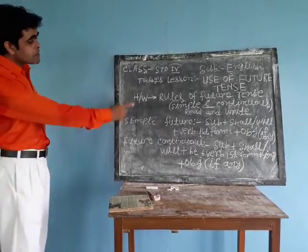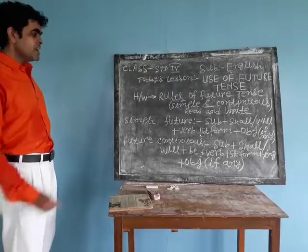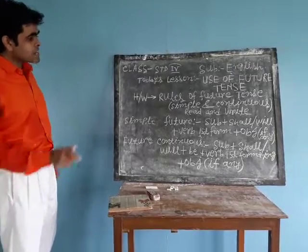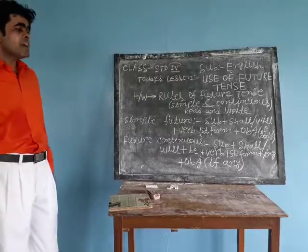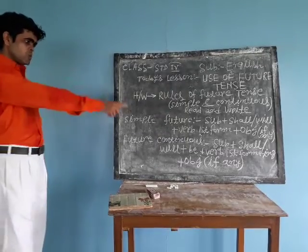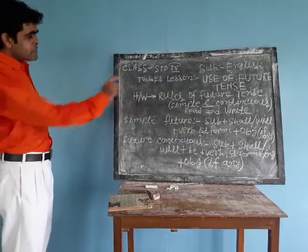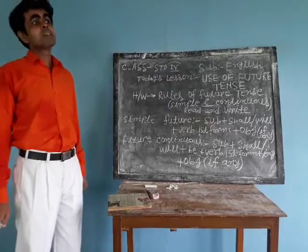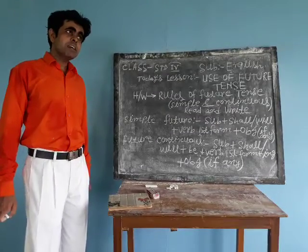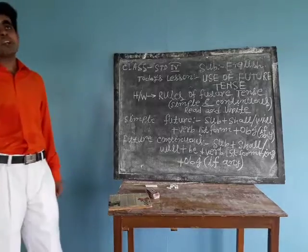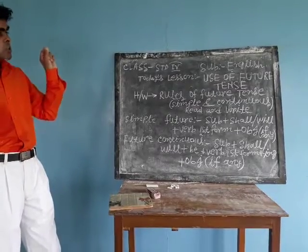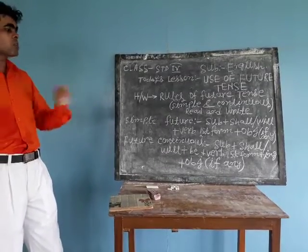The verb 'be' is used with shall and will, and the V+ing form is used with the main verb. This applies in present continuous, past continuous, and future continuous tenses.